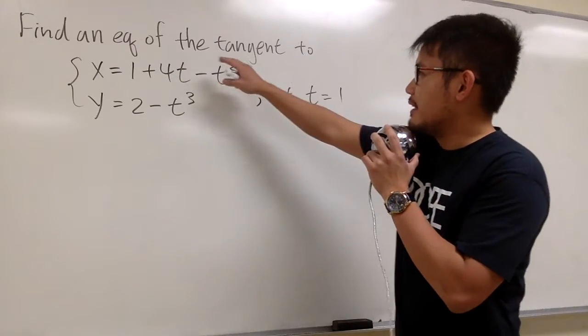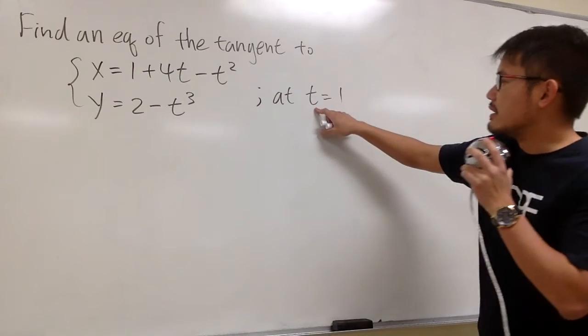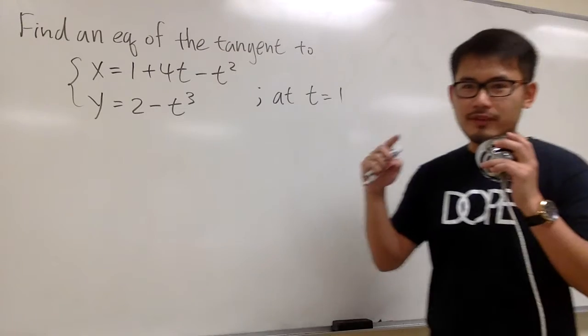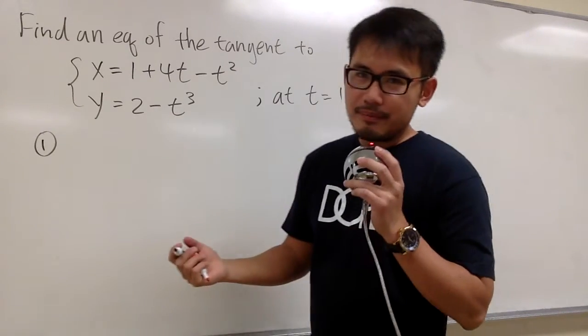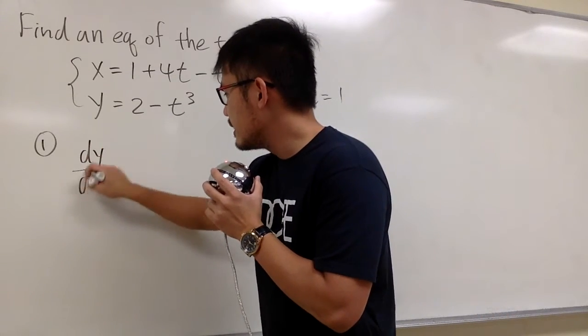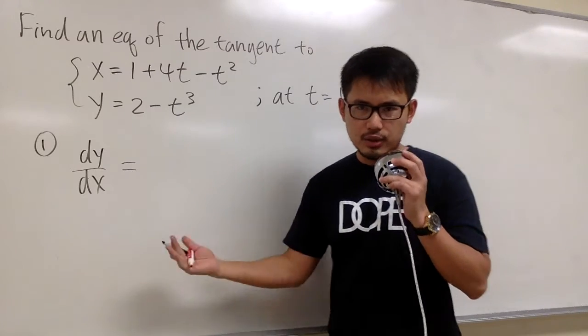I will show you how to find an equation of the line tangent to this parametric equation at t equals 1. Remember we need two things to find the equation of the tangent line. First, we need to get the derivative, and the derivative in this case means we need to get dy/dx. This will tell you the slope of the tangent line, so let's go ahead and find that.